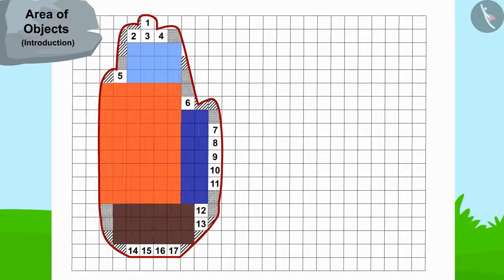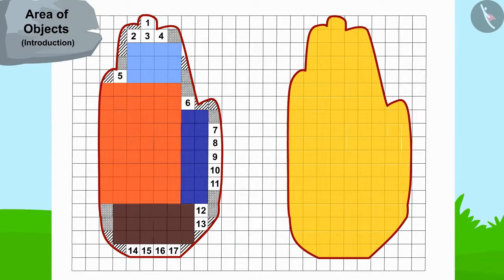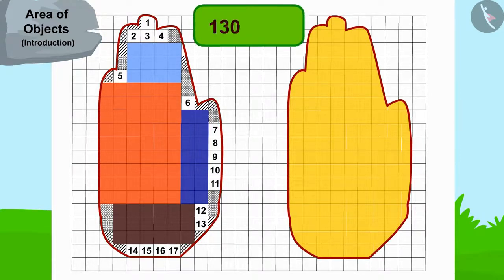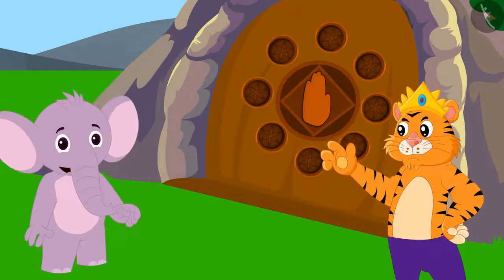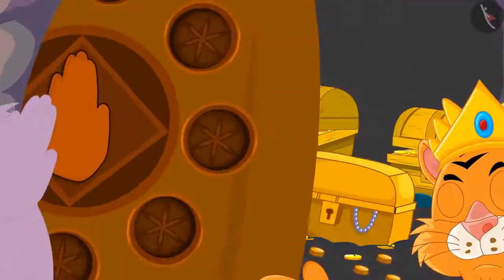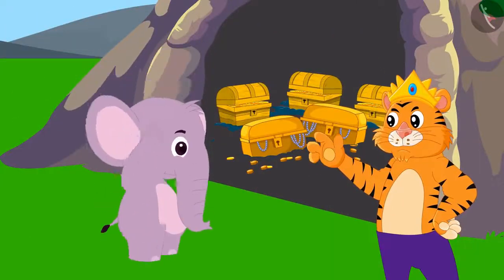Appu's hand impression matched the impression on the cave door. The king opened the door with Appu's help and gave him half of the treasure in return.